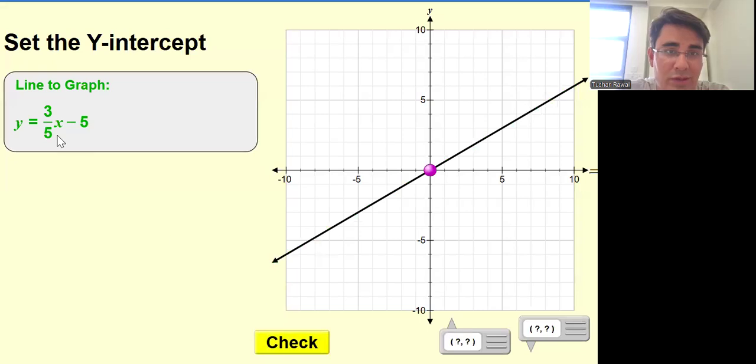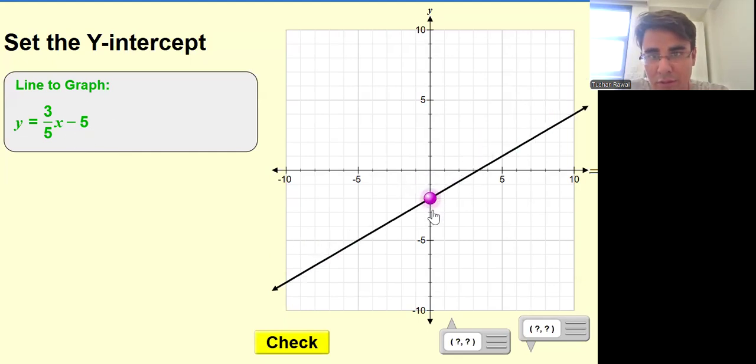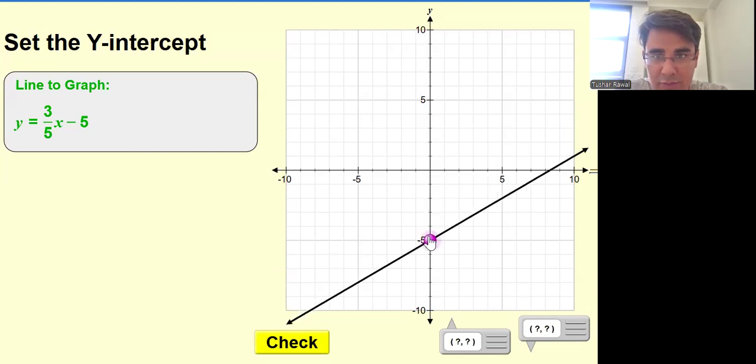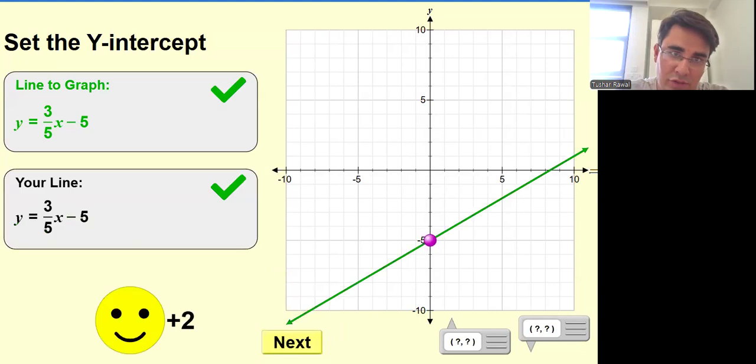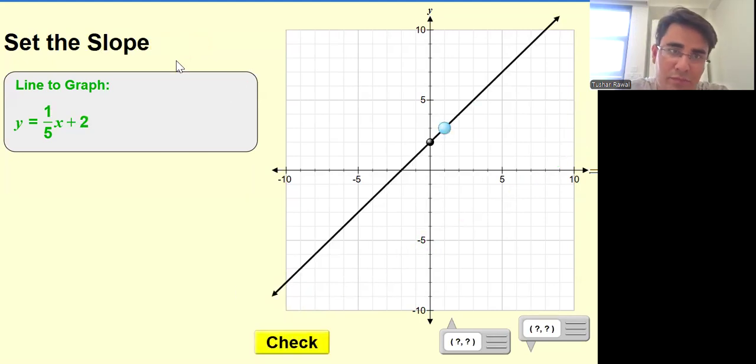Let's move on to the next one. This is y equals mx plus c form, so I need to place this point. This minus 5 is the y-intercept. I will take this as my y-intercept, minus 5. The slope is already set. Let me just check - yeah, that's correct.